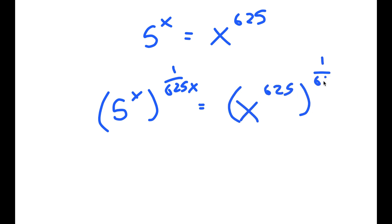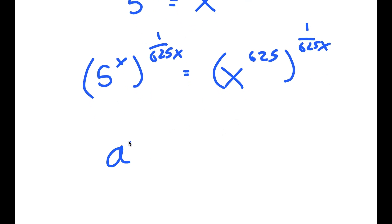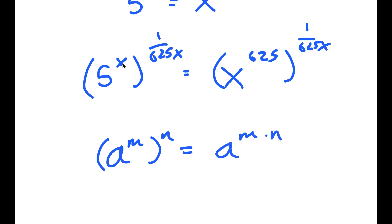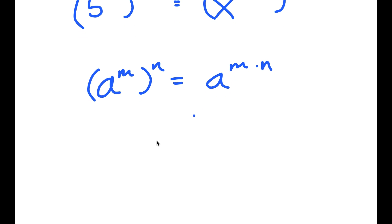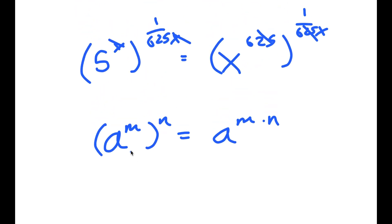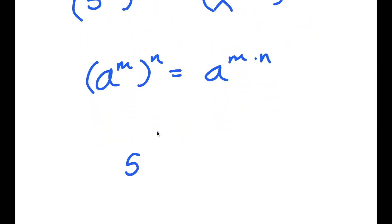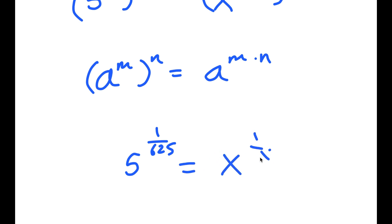The reason I'm doing this is because a to the power of m to the power of n is equal to a to the power of m times n. So these two multiply and cancel out, and these two multiply and cancel out. Now I'm left with 5 to the power of 1 over 625 is equal to x to the power of 1 over x.